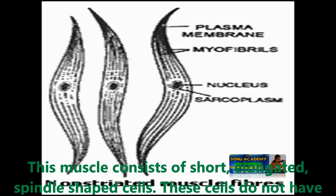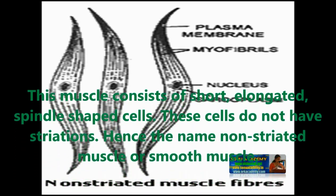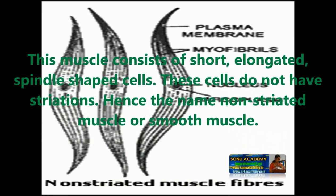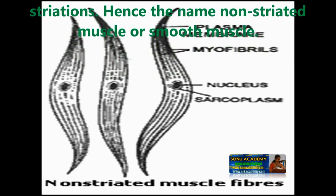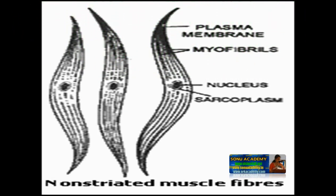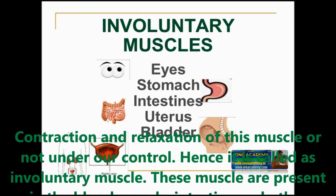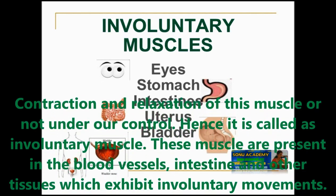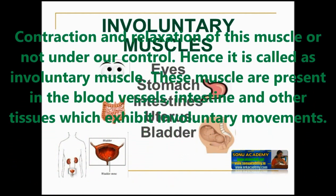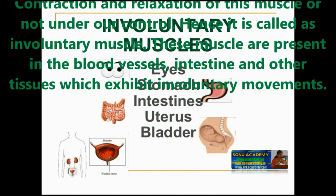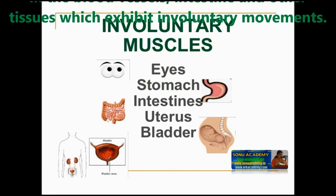Non-striated muscle consists of short, elongated, spindle-shaped cells. These cells do not have striations, hence the name non-striated or smooth muscles. Contraction and relaxation of this muscle is not under our control; hence it is called involuntary muscle. These muscles are present in blood vessels, intestine and other tissues which exhibit involuntary movement.